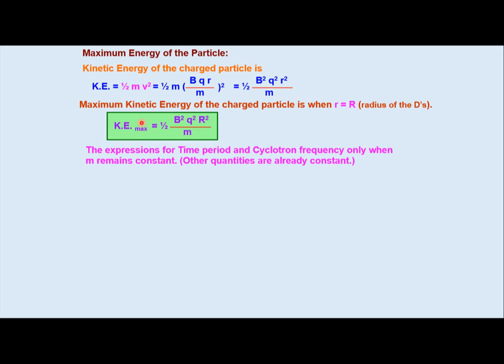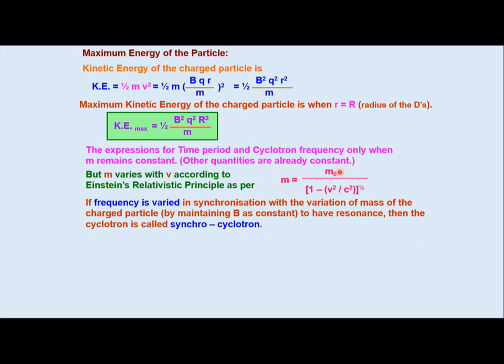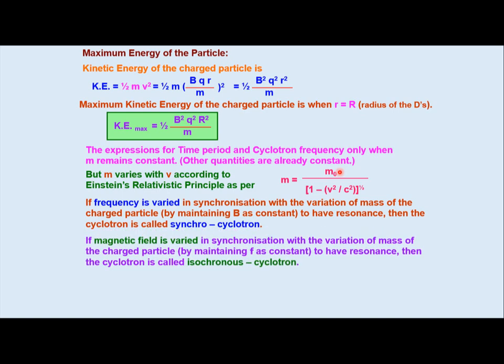The expressions for time period and cyclotron frequency only when mass m remains constant. But m varies with v according to Einstein's Relativistic Principle as per m = m₀/√(1 - v²/c²). Basically this is relativistic mass correction formula where m is the instantaneous mass and m₀ is the rest mass. If frequency is varied in synchronization with the variation of mass of the charged particle to have resonance, then the cyclotron is called synchrotron. If magnetic field is varied in synchronization with the variation of mass of the charged particle to have resonance, then cyclotron is called isochronous cyclotron.